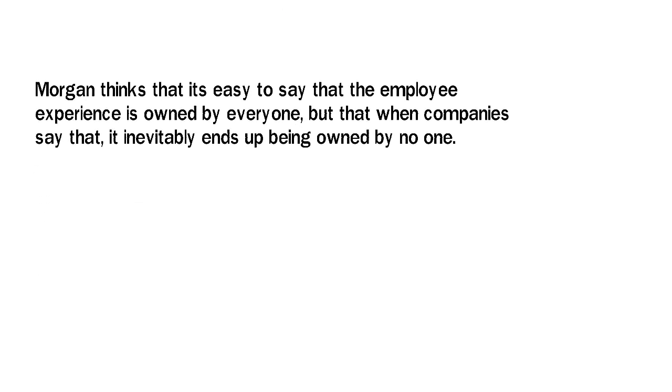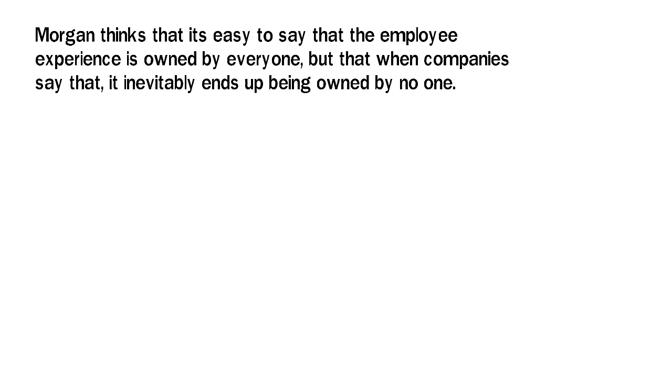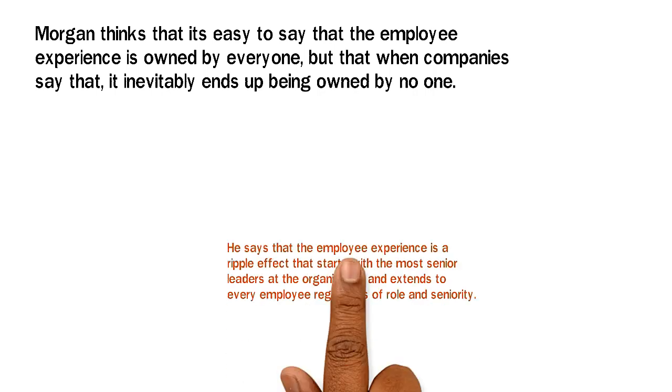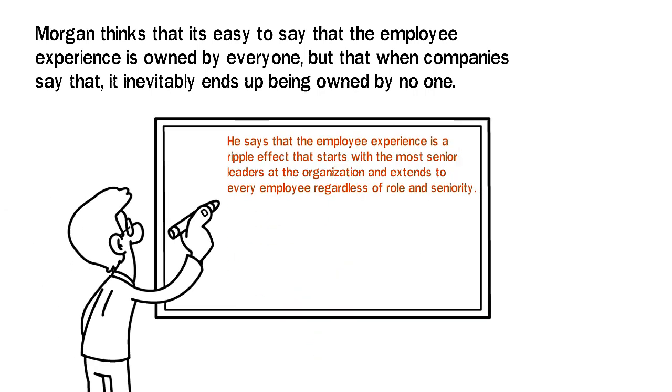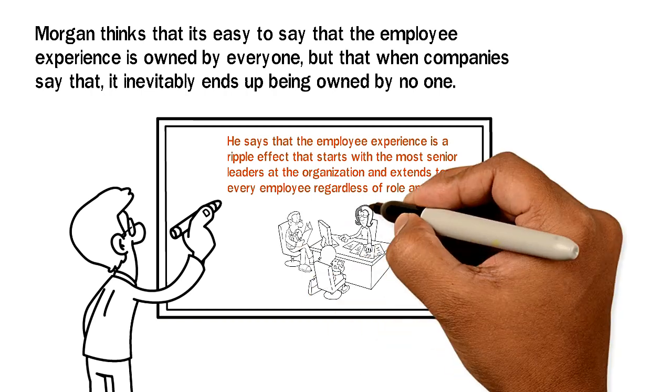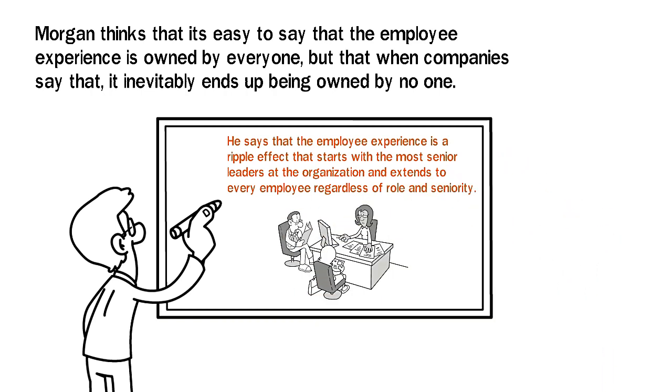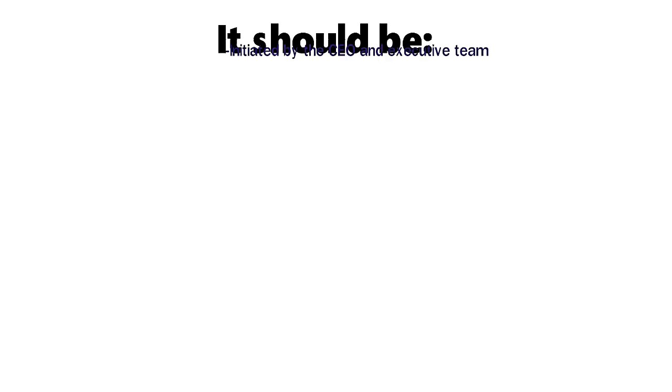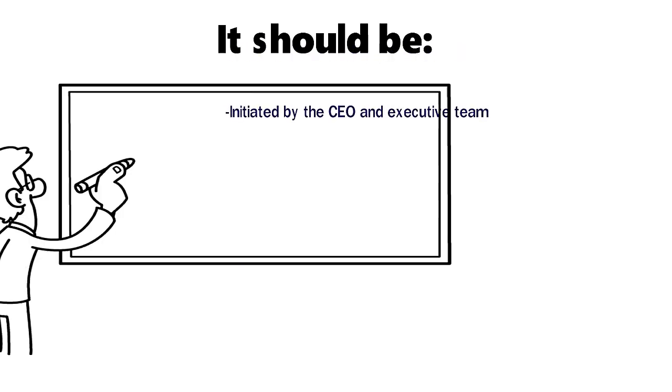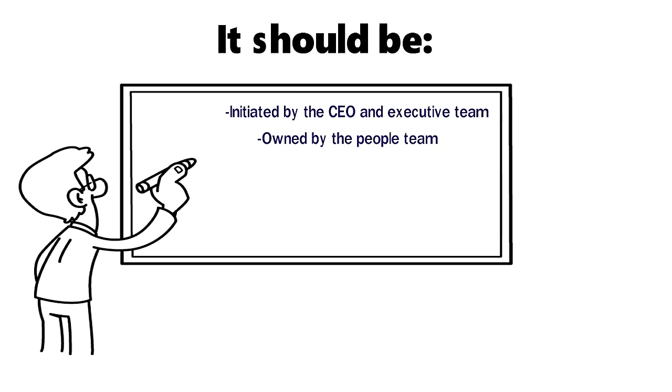Morgan thinks that it's easy to say that the employee experience is owned by everyone, but that when companies say that, it inevitably ends up being owned by no one. He says that the employee experience is a ripple effect that starts with the most senior leaders at the organization and extends to every employee regardless of role and seniority. It should be initiated by the CEO and executive team, owned by the people team, driven by the managers, and championed by everyone.